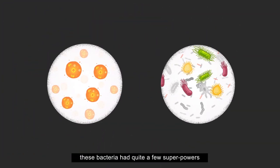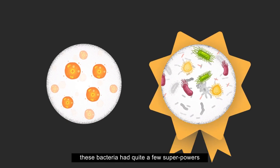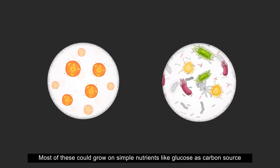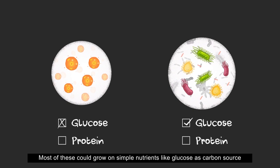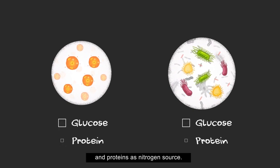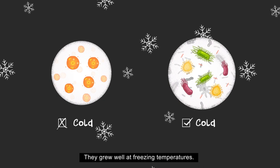Unlike our cells, these bacteria had quite a few superpowers. Most of these could grow on simple nutrients like glucose as carbon source and proteins as nitrogen source. They grew well at freezing temperatures.